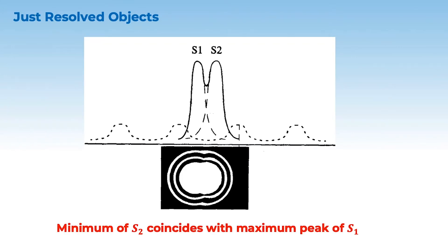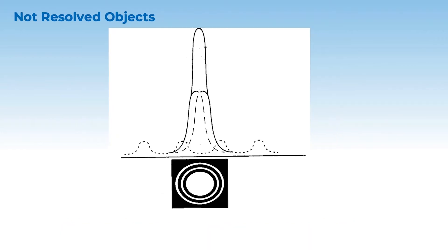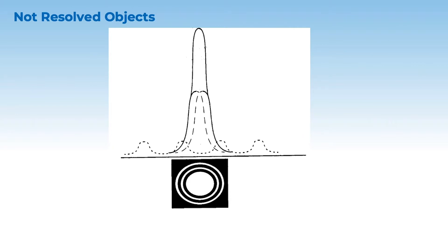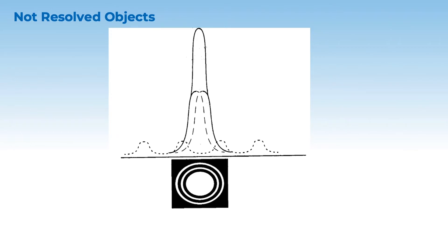Just resolved object basically happens when S2's minimum coincides with S1's maximum peak. As you can clearly see here, S2's minimum has reached S1's peak. So in this condition we say that objects are just resolved. Not resolved happens when both maxima coincide. So just resolved: when one's maxima coincides with the other's minima, then it's just resolved and when both maxima coincide, then it's unresolved.